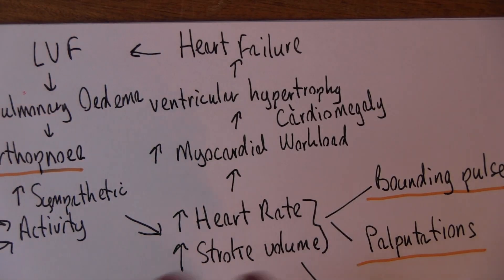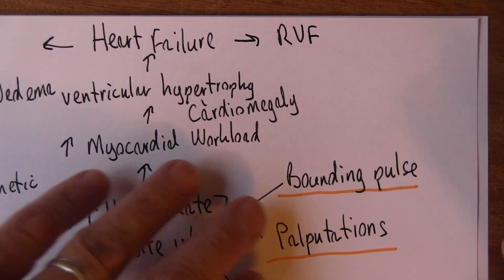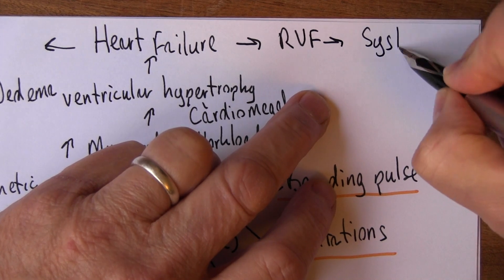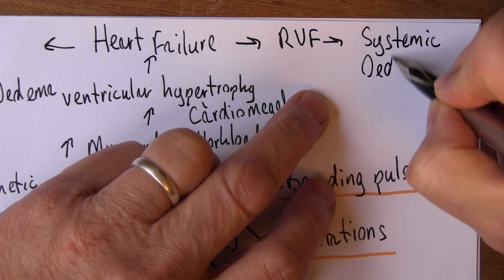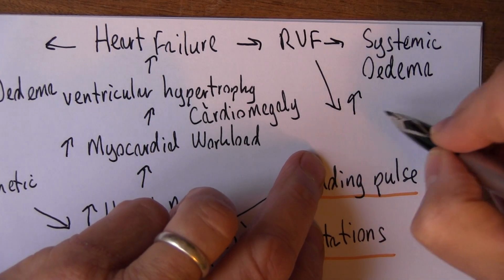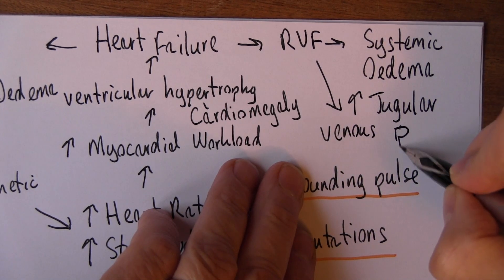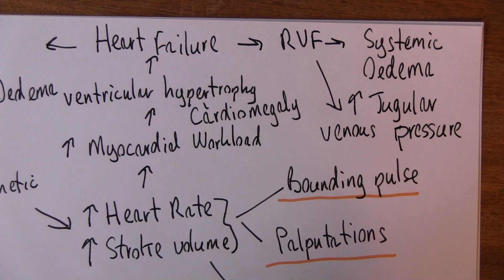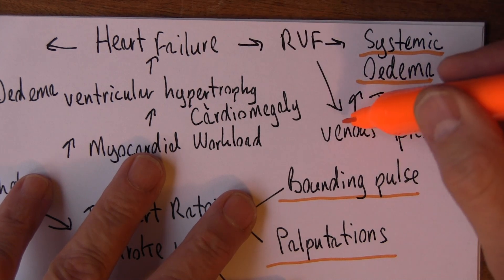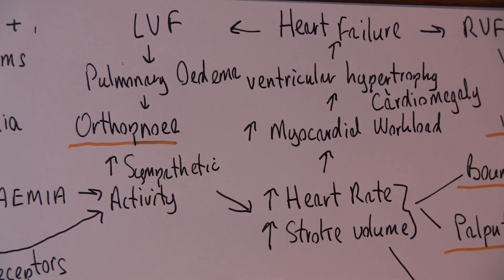The heart failure also affects the right ventricle. Right ventricular failure leads to an increase in venous pressure in the systemic veins, causing systemic oedema — you'll probably notice swollen ankles first. You'll also notice an increase in jugular venous pressure (JVP). So systemic oedema and increased JVP indicate right ventricular failure, while orthopnea indicates left ventricular failure — they just affect different sides of the heart.